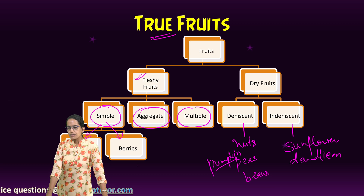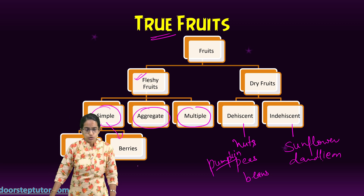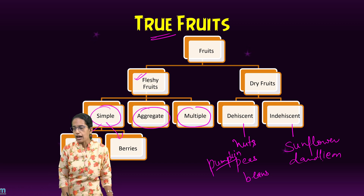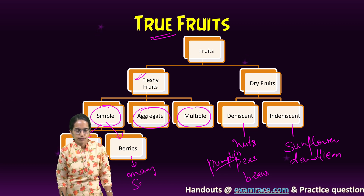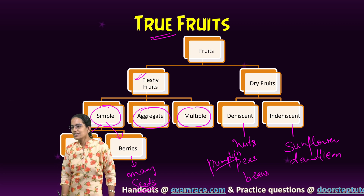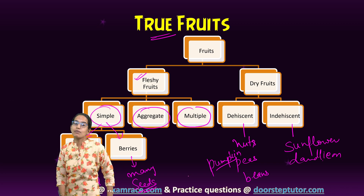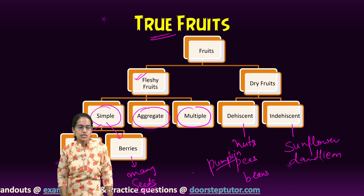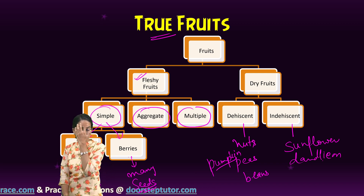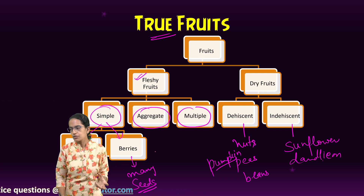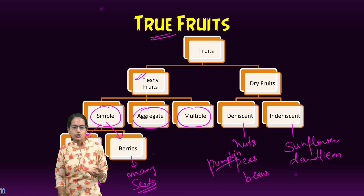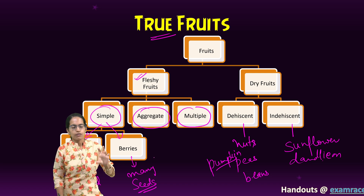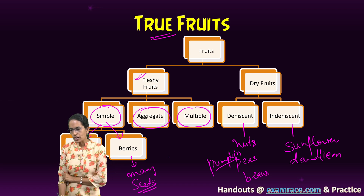What is the difference between berries and drupes? Drupes have one seed, while berries have many seeds — as simple as that. A good example of drupes would be mango and peach — they have just one seed within the fruit. Berries, such as grapes and oranges, have many seeds within the fruit.